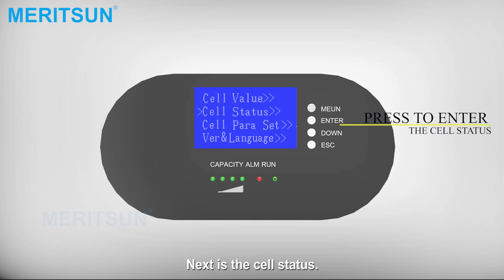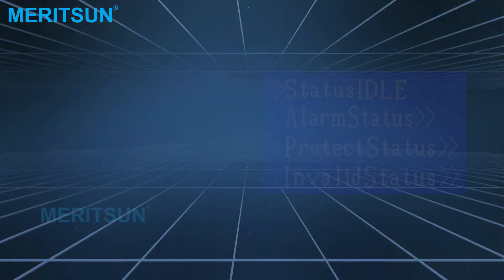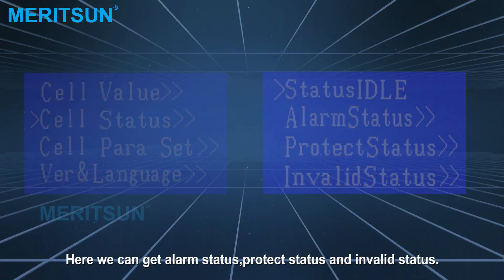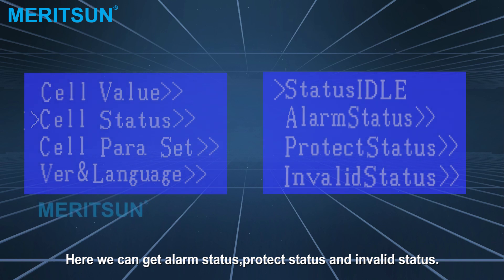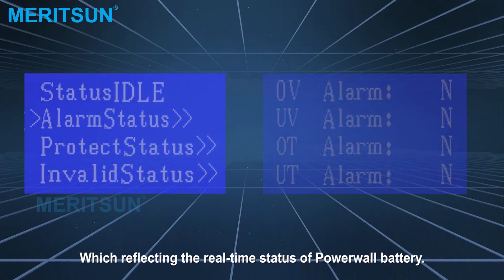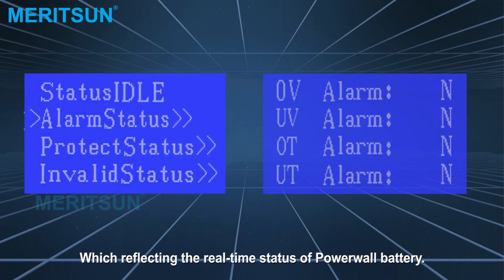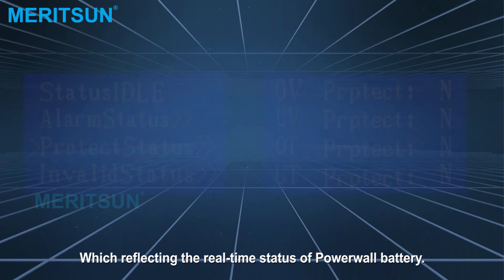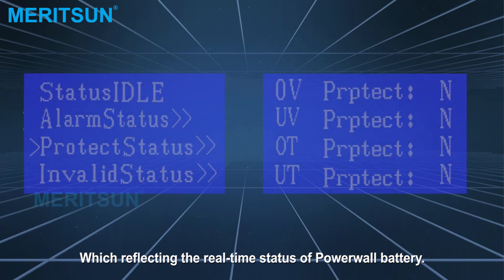Next is the cell status. Here we can get alarm status, protect status, and invalid status, which reflect the real-time status of the Powerwall battery.